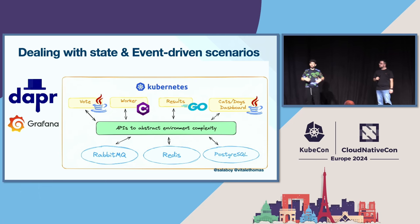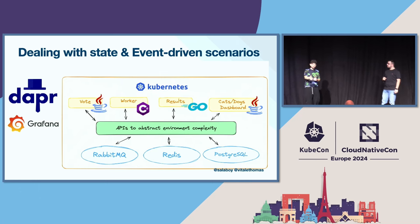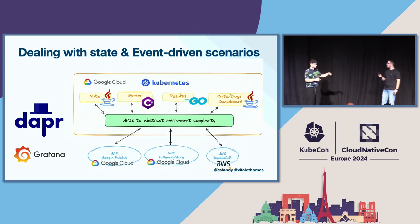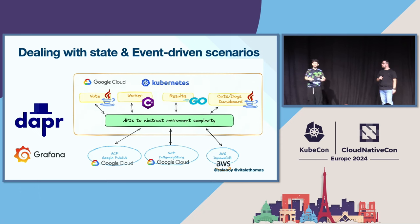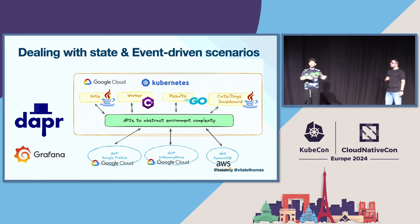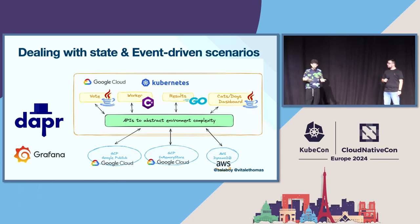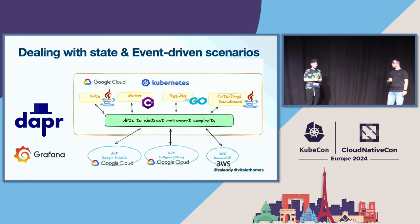From the application point of view, you have APIs to interact with infrastructure. Do you want to send a message? Do you want to store some data? You'll use those APIs instead of interacting directly with Redis, PostgreSQL, or RabbitMQ. Having APIs is really important because you can have different implementations. If we're running on Google Cloud, maybe we want to use Google PubSub instead of RabbitMQ because it's a managed service. The same with Redis or the Google in-memory store — it's the same API. So you can replace implementations and move your application across environments without changing the code. Dapr has different implementations for different providers — for example DynamoDB in AWS instead of PostgreSQL.